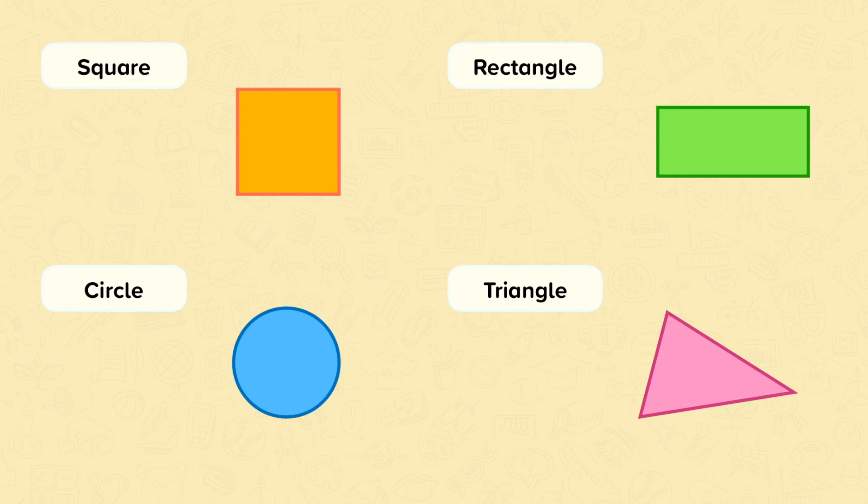Here are some 2D shapes whose names you should know. First we'll look at the square. This shape has four sides. All the sides are straight lines, and all the sides are the same length. So this side is the same length as this side, and this side, and this side.